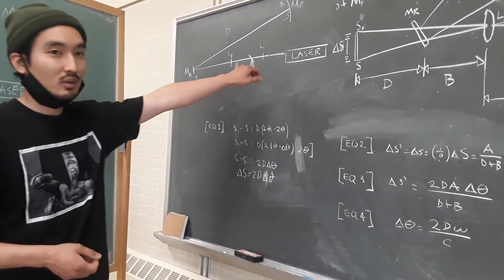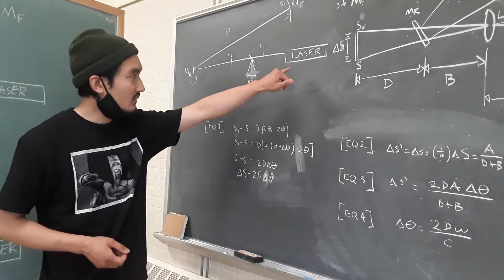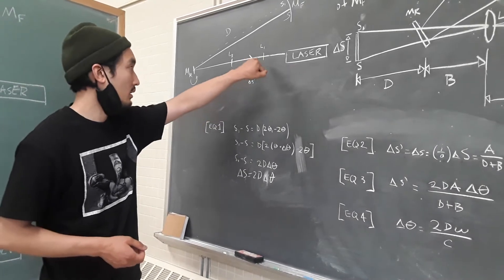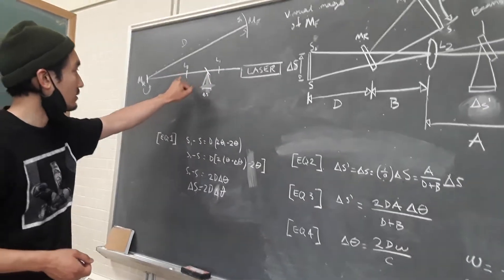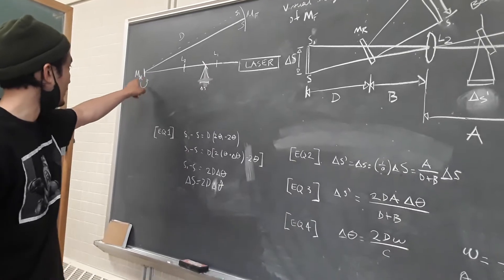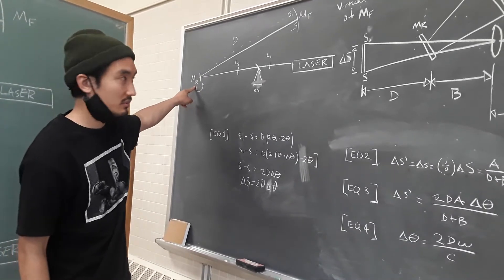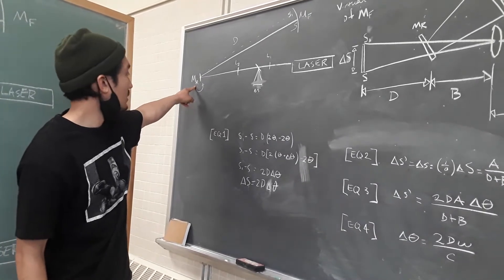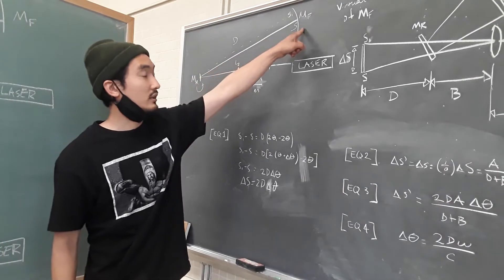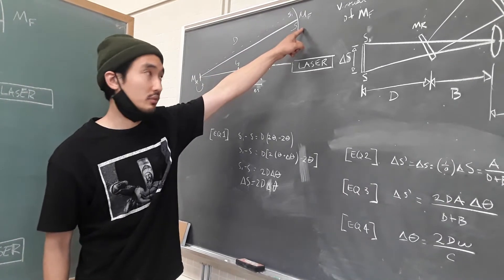So just to review what we did, we shone a laser beam through one focal lens, a second focal lens, and we hit it off a rotating mirror, M sub R,